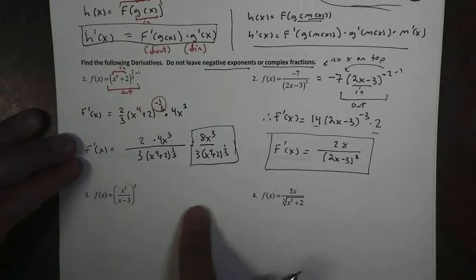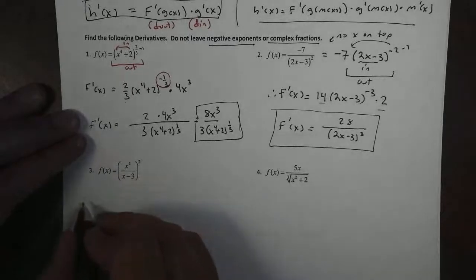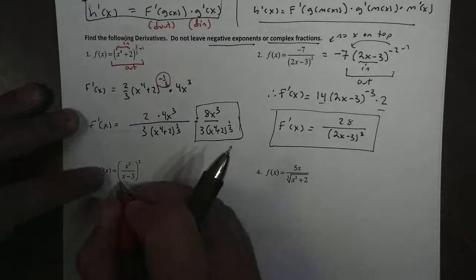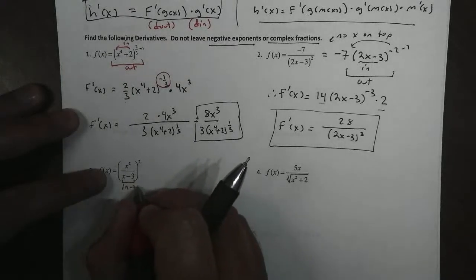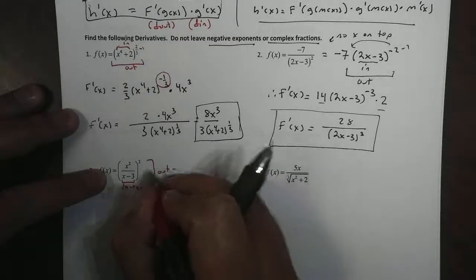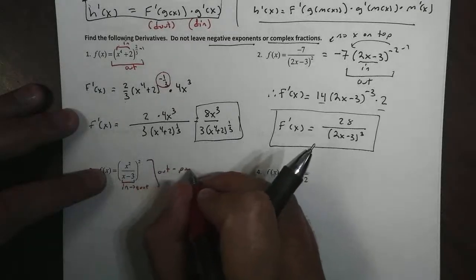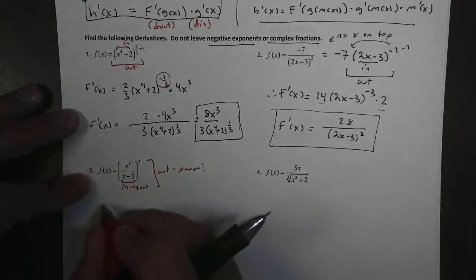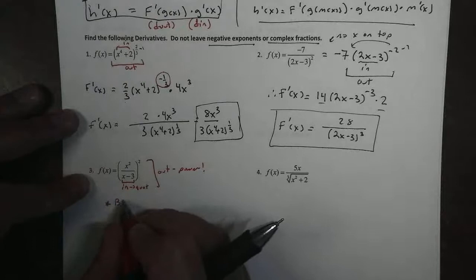For number three, we'll stop here for number three for the first part. For number three, taking the derivative, we have to look at two things. Now you might notice on the inside, we have a quotient rule. But on the outside, we have this power rule. So the question students always ask is, which one goes first? I use something called big picture.